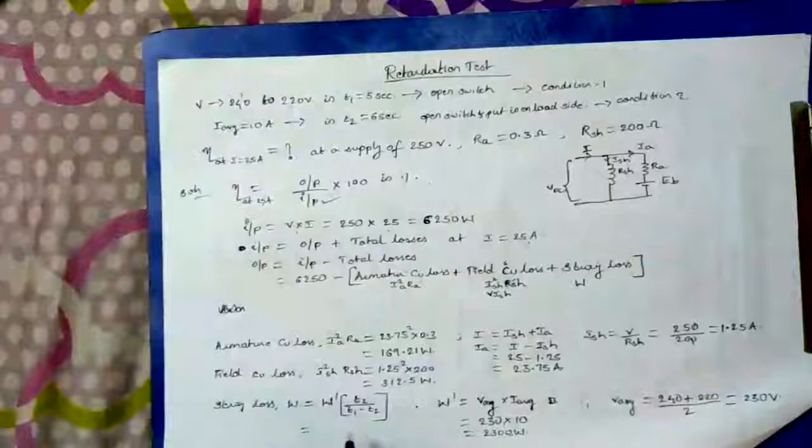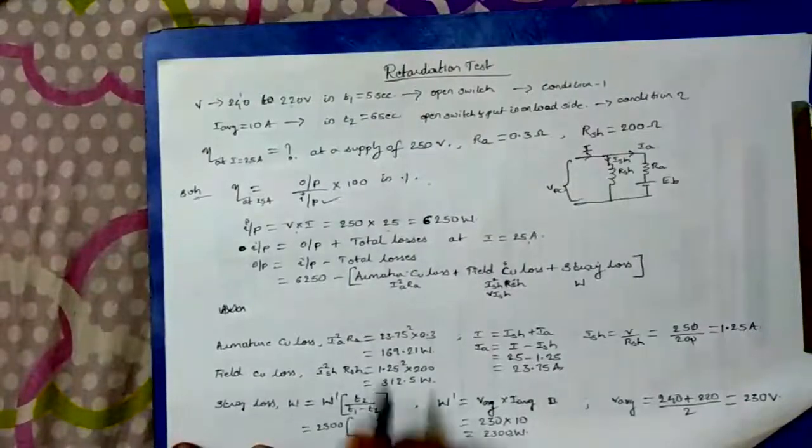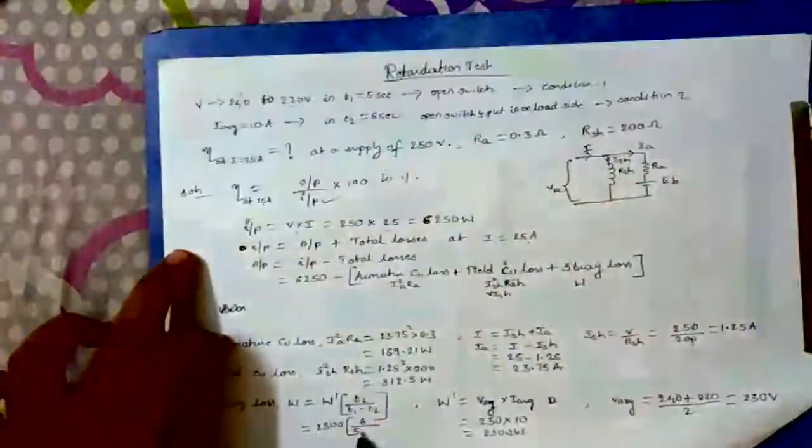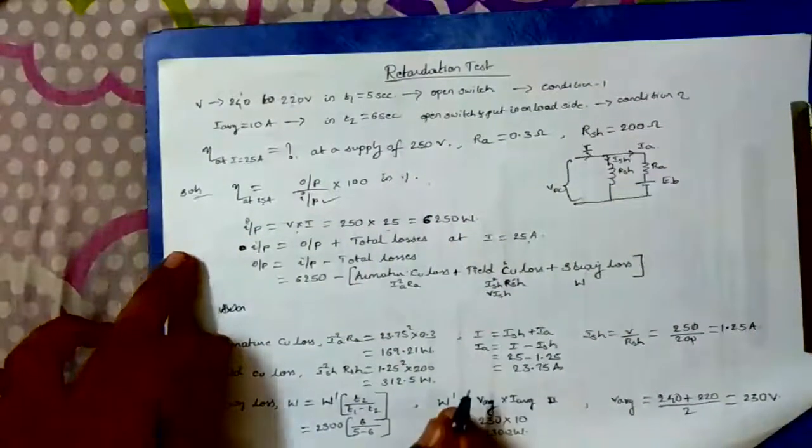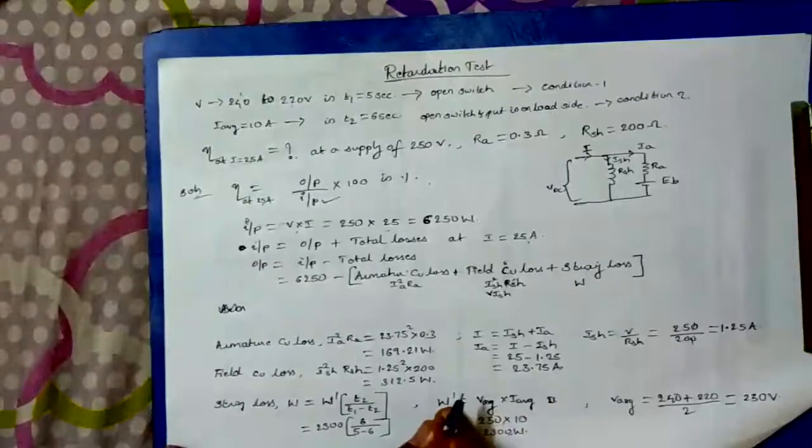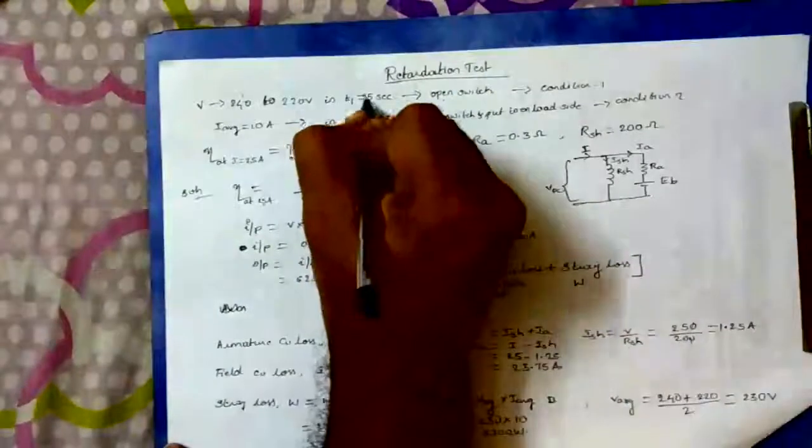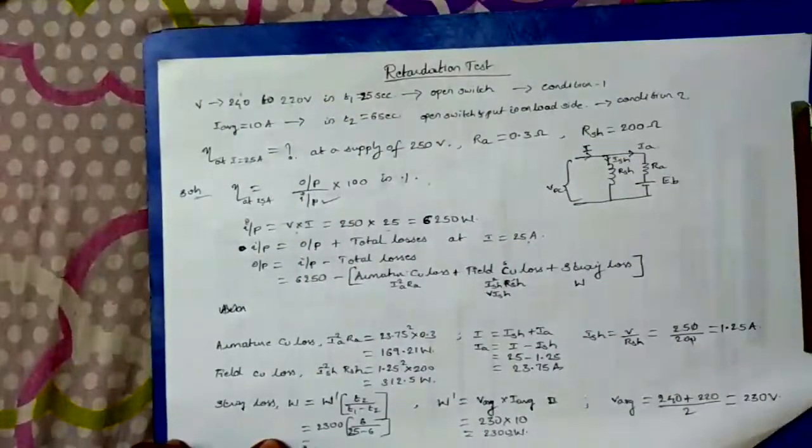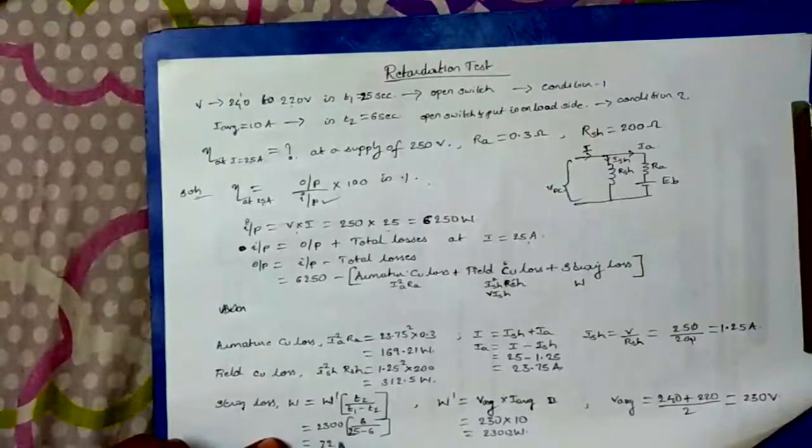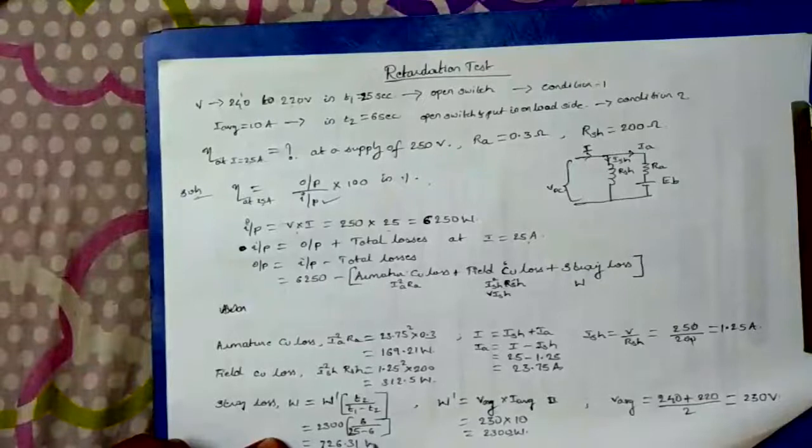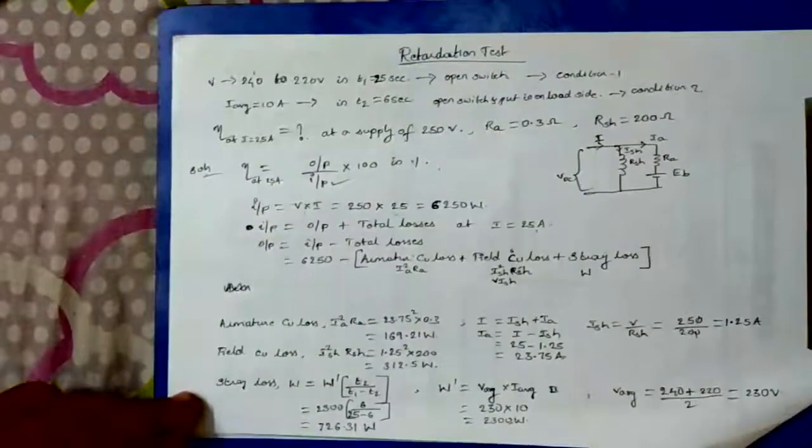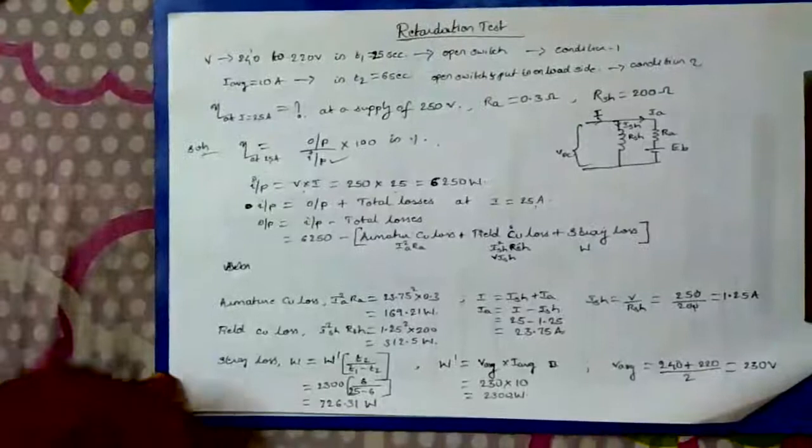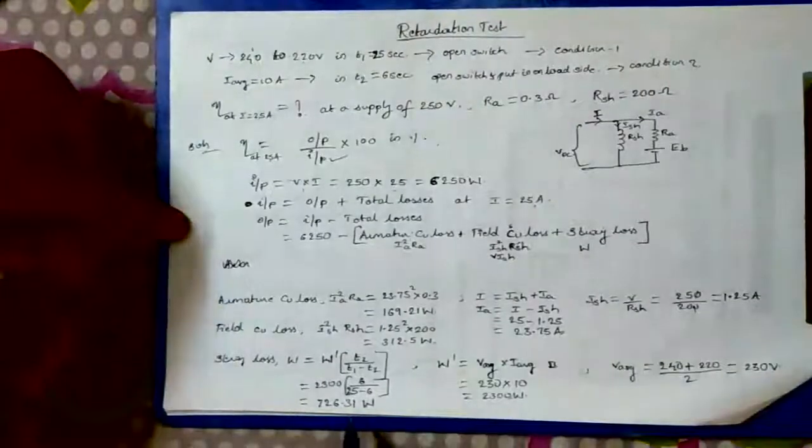If I substitute back here, 2300 and T2 is 6 seconds, T1 is 25 seconds minus 6. The answer will be 726.31 watts. If they give current like it decreases from 10 ampere to 7 ampere, then I average equals the two currents added and divided by 2. If given directly, just take it as is.